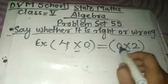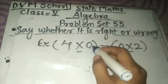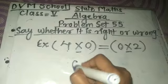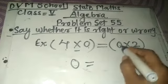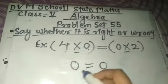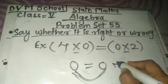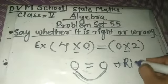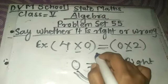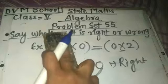0 times any number, the answer is always 0. 4×0 or 0×4, and it is equal to 0. Now tell me, are both sides the same? Whether it is correct or wrong? That is absolutely right. This statement is right.